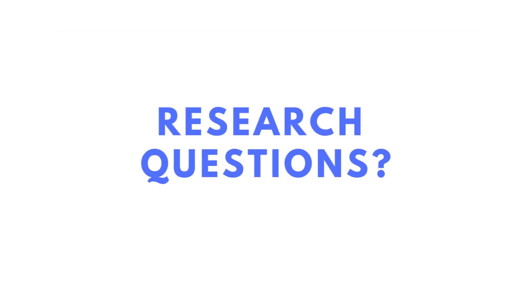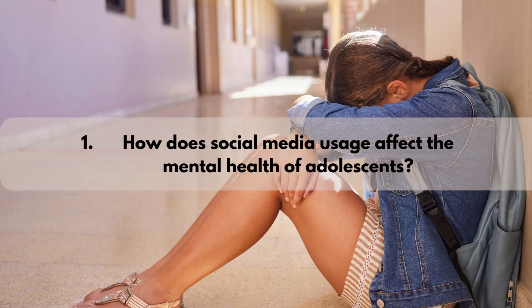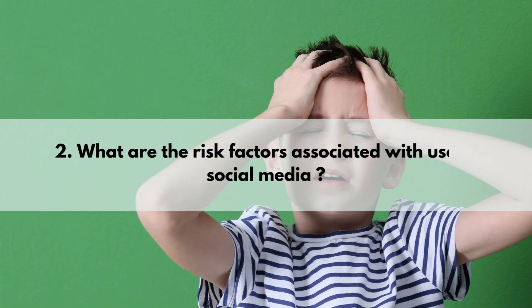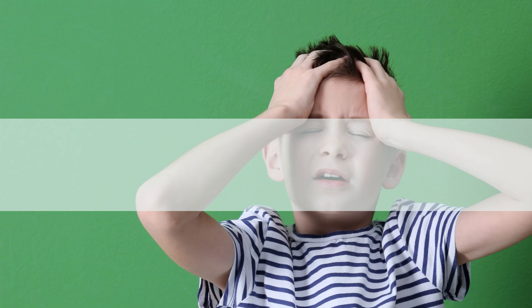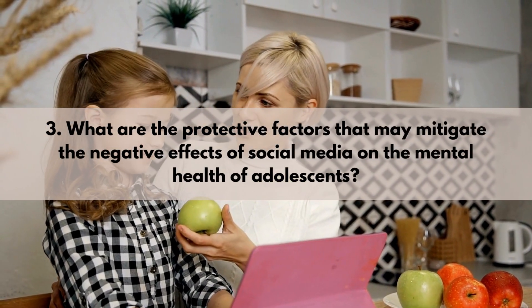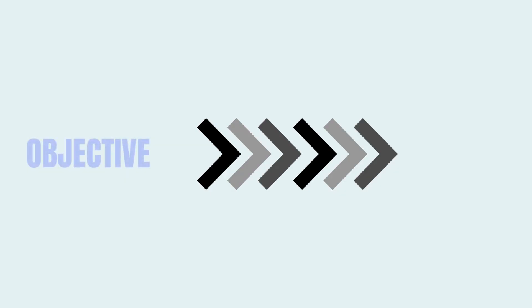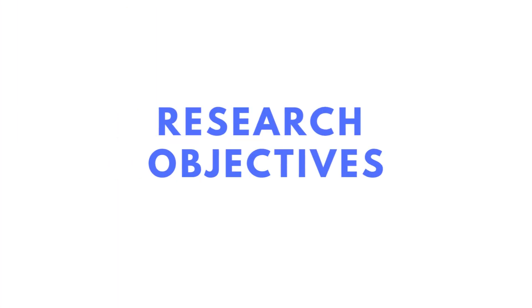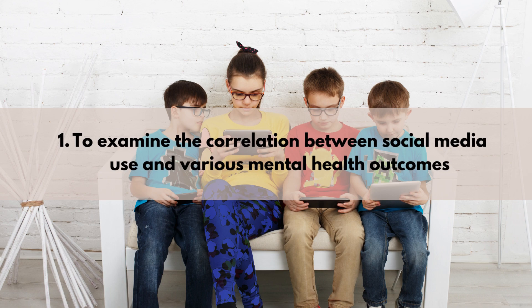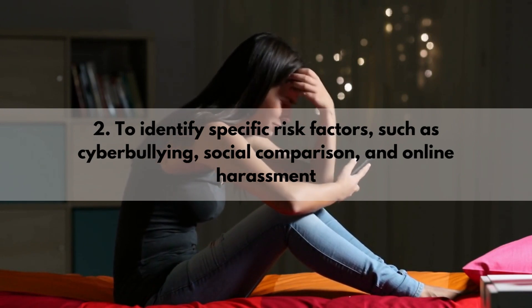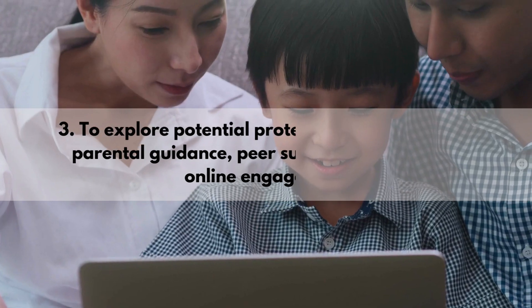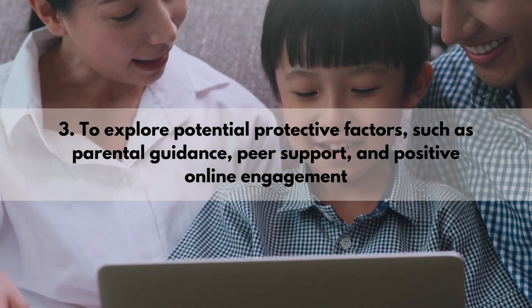Therefore, the questions for this problem would be: how does social media usage affect the mental health of adolescents? What are the potential risk factors associated with it? What are the protective factors that may mitigate the negative effects of social media? And so on. Parallelly, the research objectives would start with the word 'to.' So the objectives would be: to examine the correlation between social media use and various mental health outcomes; to identify specific risk factors such as cyberbullying, social comparison, and online harassment; then to explore potential protective factors, and so on.